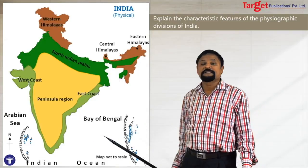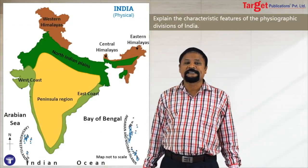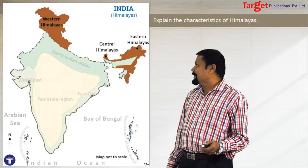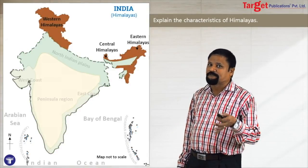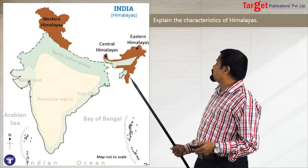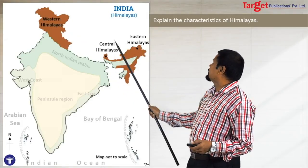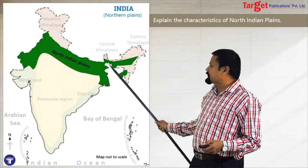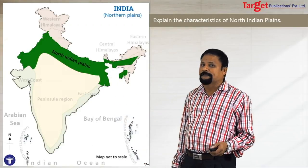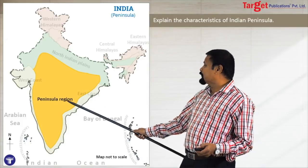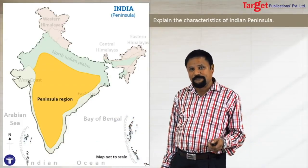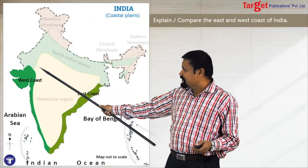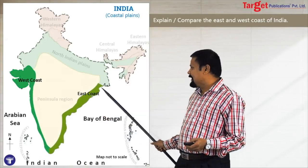Then the fifth division is the Indian Islands. Students, the islands are not in the stencil, so you have to draw them yourself. Sometimes the question may be about a particular physical division. For example, if the question is about the Himalayan physical division, you write only the Himalayas' characteristics. Or if it's about the North Indian Plain, you draw only that. If it's about the peninsula region, mark only that. If it's about the coastal region, draw that and differentiate the west coastal plain and east coast with different colors.